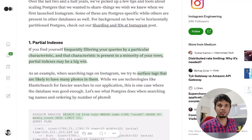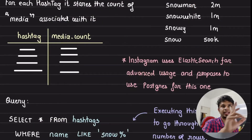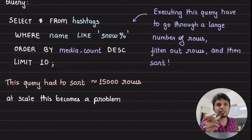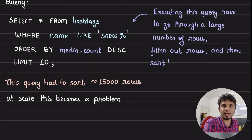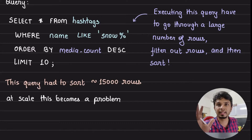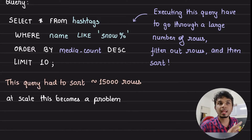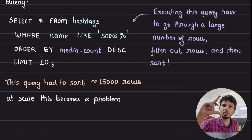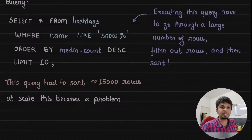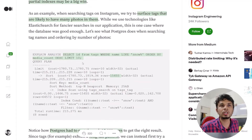The schema is simple: a hashtags table with a name and media count column. A typical SQL query looks like: SELECT * FROM hashtags WHERE name LIKE 'snow%' ORDER BY media_count DESC LIMIT 10. This surfaces the top 10 hashtags starting with that prefix, ordered by the highest media count.